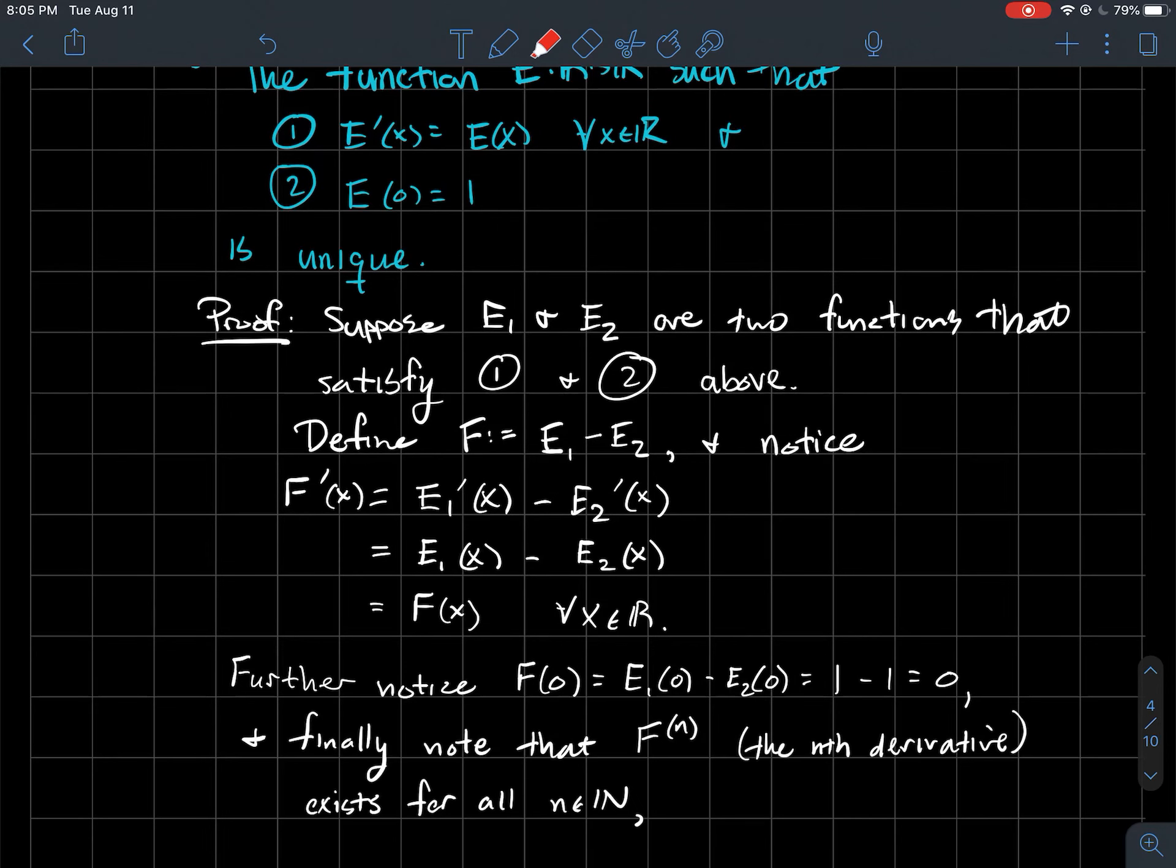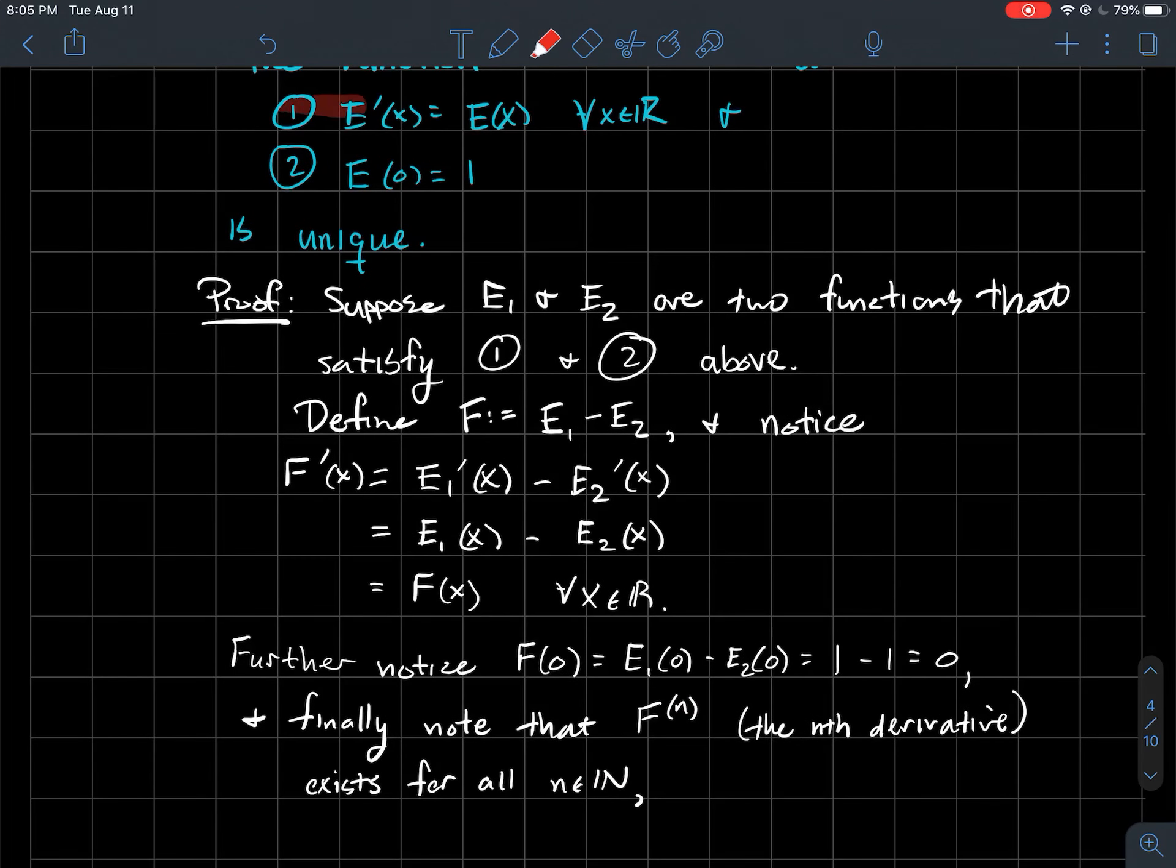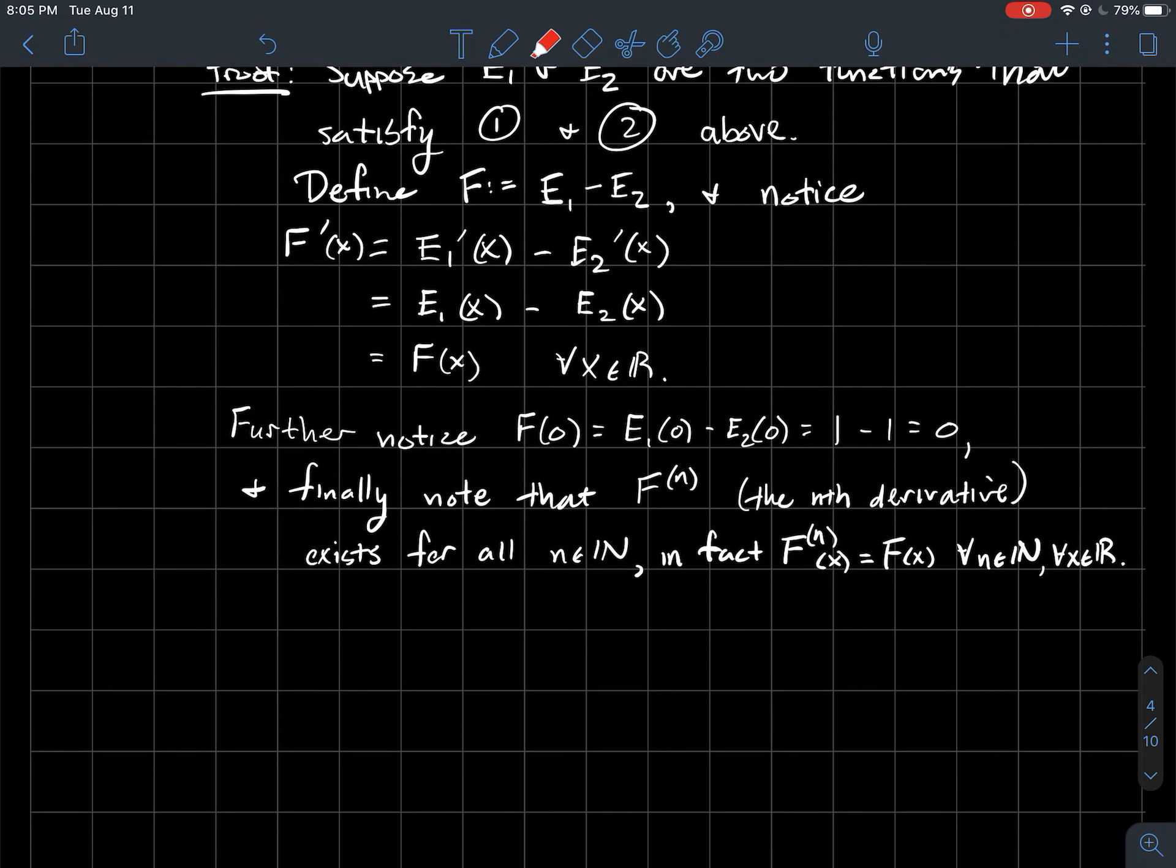Okay, so what are some other things we want to notice about this function? Well, that the nth derivative, remember that's the notation for nth derivative, that exists for every natural number. In other words, you could differentiate this function as many times as you want. It's because of this property up here that we've assumed E1 and E2 are their own derivatives. In particular though, the nth derivative of F is equal to just F for every natural number. Take whatever derivative you want, it still gives back F.